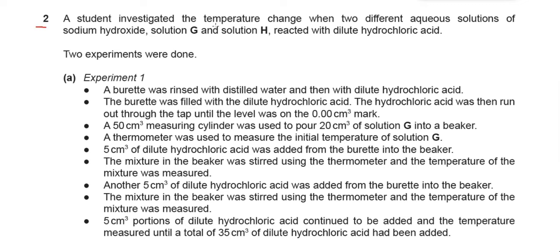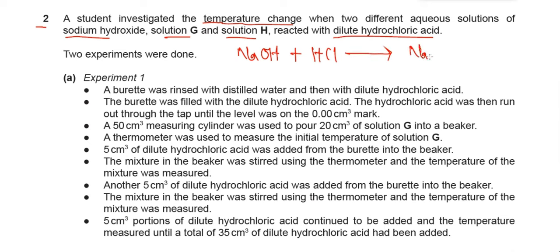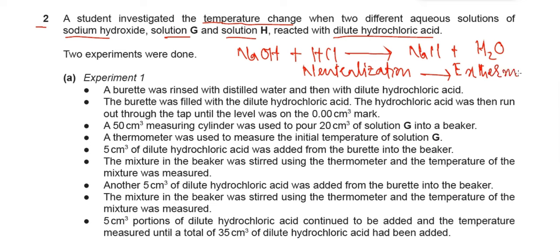A student investigated the temperature change when two different aqueous solutions of sodium hydroxide — Solution G and Solution H — reacted with dilute hydrochloric acid. Whenever NaOH reacts with HCl, a salt (sodium chloride) and water are formed. This is called neutralization. Neutralization reactions are exothermic, so the temperature will be rising during the course of the reaction.